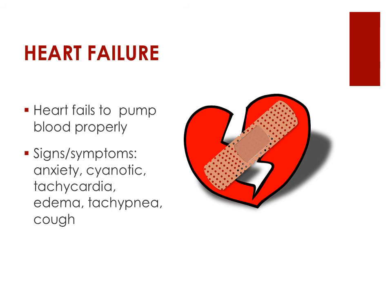Chronic high blood pressure can put stress on the heart and cause the heart to be unable to push the normal amount of blood around the body — this is called congestive heart failure. Signs and symptoms are anxiety, cyanosis, tachycardia, edema, tachypnea, and cough. ACE inhibitors, beta blockers, and diuretics are often used to slow the heart rate down and decrease the amount of blood the heart has to push. Vasodilators and cardiac glucosides may also be used.